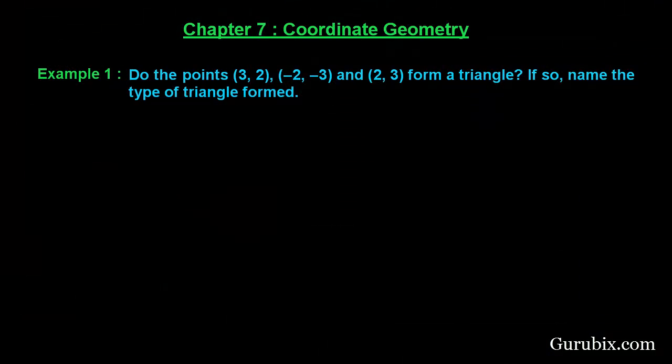Welcome friends. In this video we shall solve example number one of chapter 7. The example says: do the points (3,2), (-2,-3), and (2,3) form a triangle? If so, name the type of triangle formed. This is a very important question. Let us see how to solve this example.